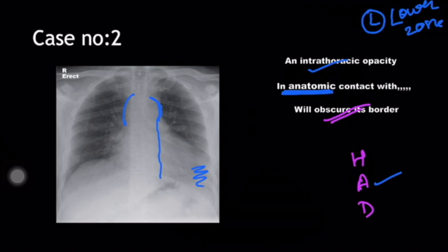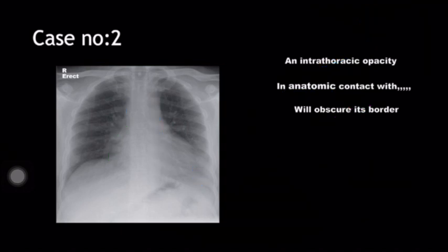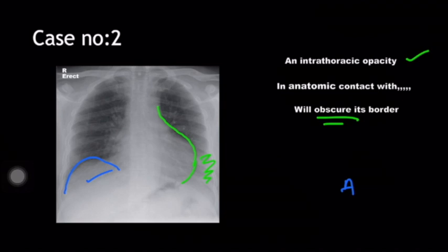What about the heart? The right heart border is intact. What about the left? Look carefully — you can make out the left cardiac margin through the radio-opacity. The right diaphragm is intact. The aorta is intact, the right heart border as well as the left heart border is intact. Can you make out the left diaphragm? Not possible — you cannot make out the left diaphragmatic outline.